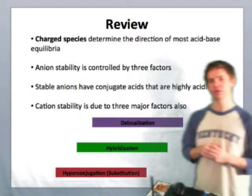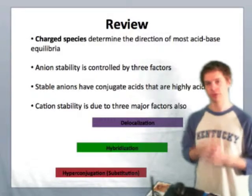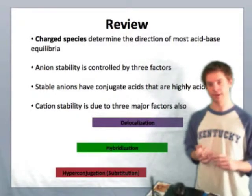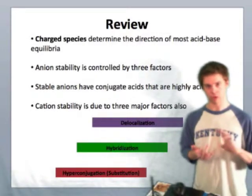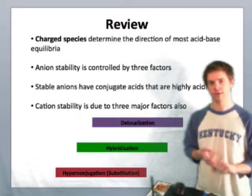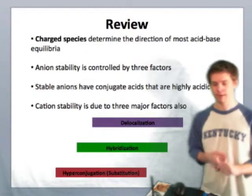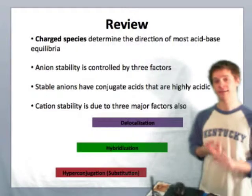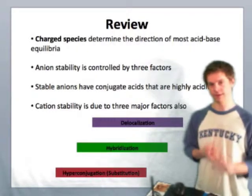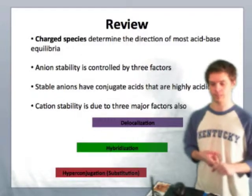Last time we looked at the stability of anions, and we saw that three factors primarily controlled anion stability. These were solvent effects, delocalization, and hybridization. Electronegativity is also important for the stability of anions, and we'll see that in this lesson as well.